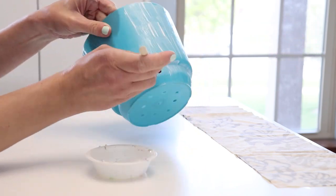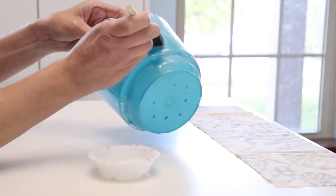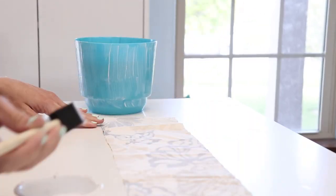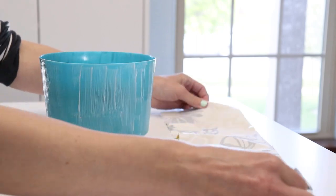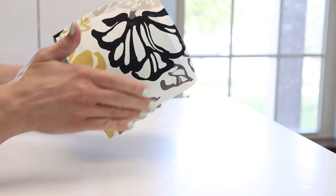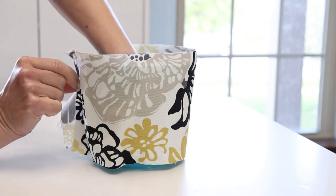Now for this planter we are just going to cover the whole thing in Mod Podge, a nice light coat, and then we're going to add a light coat to the back side of the fabric as well. Then we're going to put them together and just use your fingers to smooth everything out, trim off any edges if they don't quite line up.